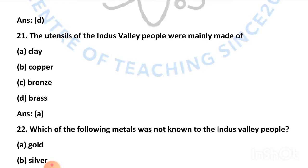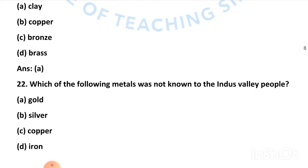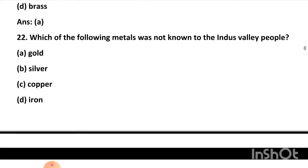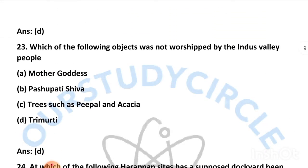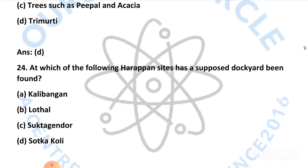Our first question is: the utensils of the Indus Valley people were mainly made of — and the right answer is clay. Our next question is: which of the following metals was not known to the Indus Valley people? — and the right answer is iron. Our next question is: which of the following objects was not worshipped by the Indus Valley people? — and the right answer is Trimurti.